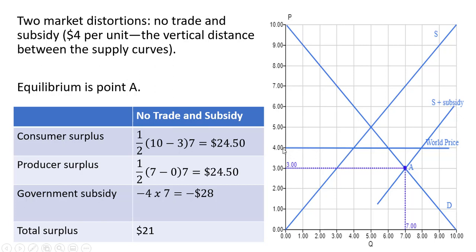There's no trade, so we can ignore this horizontal line here, which represents the world price. So the equilibrium will be at point A, where the supply curve with the subsidy intersects the demand curve.